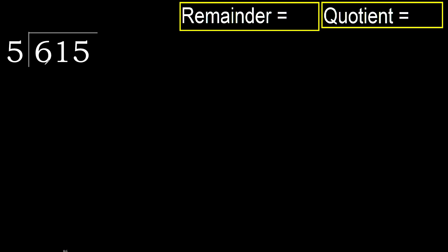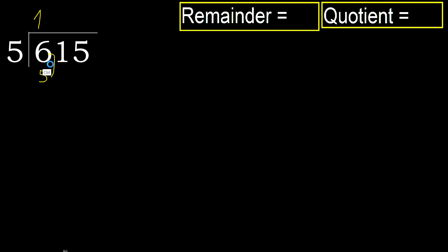615 divided by 5. 6 is not less, therefore with 6. 5 multiplied by which number is nearest to 6 but not greater? 5 multiplied by 2 is 10 — 10 is greater. Multiplied by 1 is 5 — is not greater. Ok, 6 minus 5 is 1.